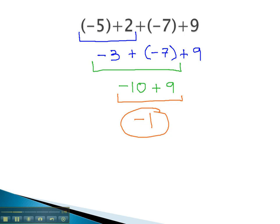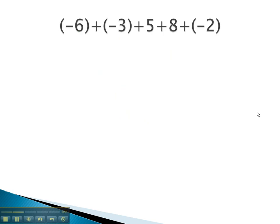Let's try another problem, where we work from left to right, using all of our rules for adding integers. In this problem, (-6) + (-3) + 5 + 8 + (-2), the operation on the far left is (-6) + (-3).